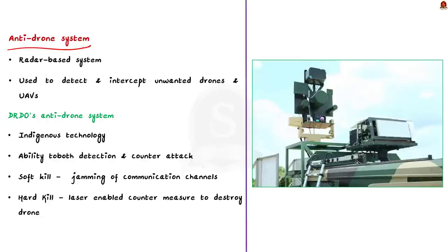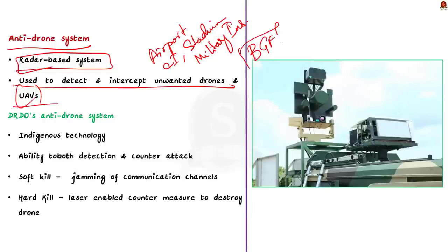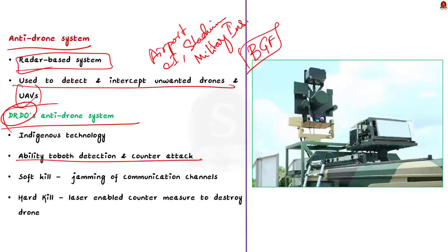An anti-drone system is a radar-based system used to detect and intercept unwanted drones and unmanned aerial vehicles (UAVs). They are deployed to protect airports, critical infrastructure, large public spaces like stadiums, and military installations. In India, anti-drone systems are widely used by border guarding forces. To counter hostile drone strikes, the Defence Research and Development Organisation (DRDO) has devised an indigenously developed anti-drone system capable of both detection and counter-attacks.